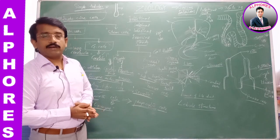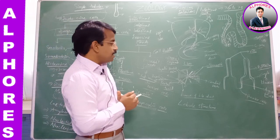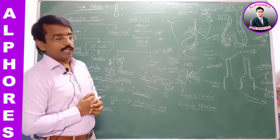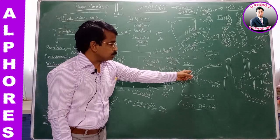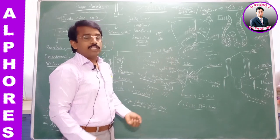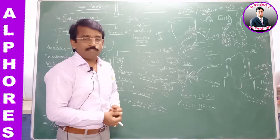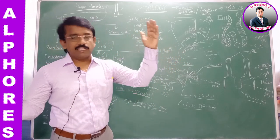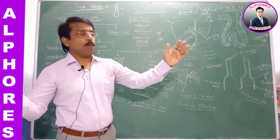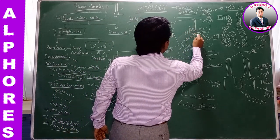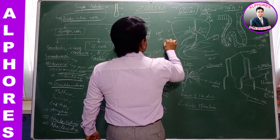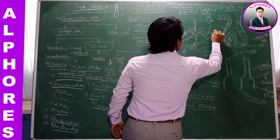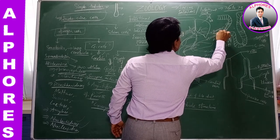Bile juice is alkaline in condition, with a pH of about 7.8. The hepatic cords secrete bile juice which enters into the bile canaliculi, then from there into the hepatic duct. The hepatic ducts of the right side and left side join together to form the common hepatic duct. Diagrammatically, the right and left hepatic ducts join together to form the common hepatic duct.